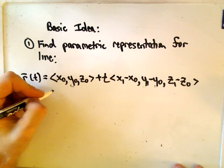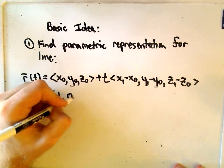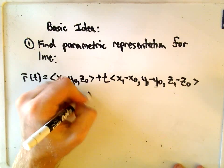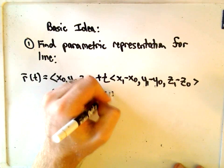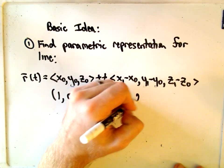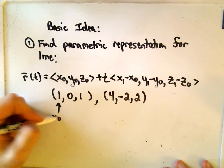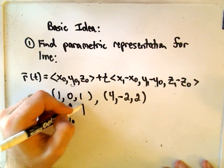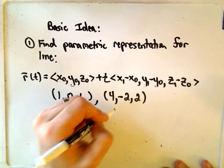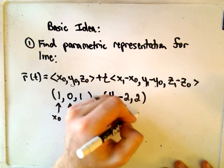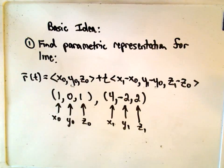Well, again, we had our point (1,0,1). Let me just label these first. So (1,0,1) and we had this point (4,-2,2). Okay, so this will be my x-naught, my y-naught, and my z-naught.